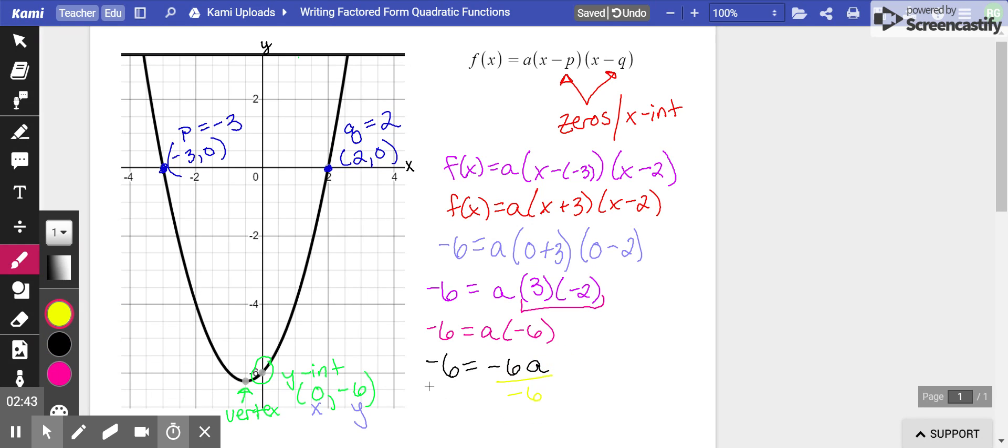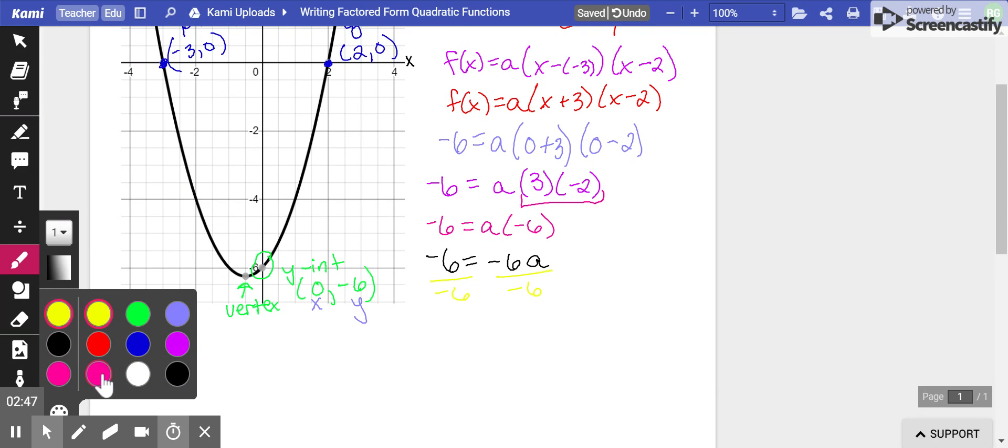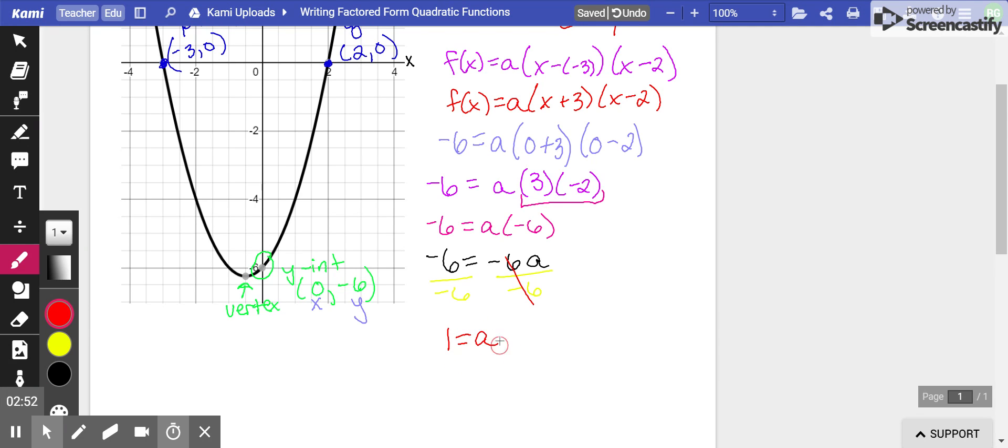Divide by the coefficient, so divide by negative 6. Negative 6 divided by negative 6 is 1. So here a equals 1.